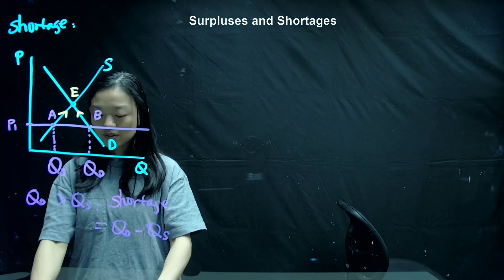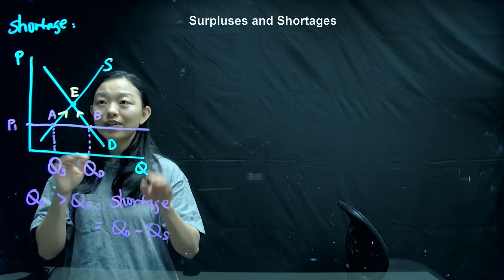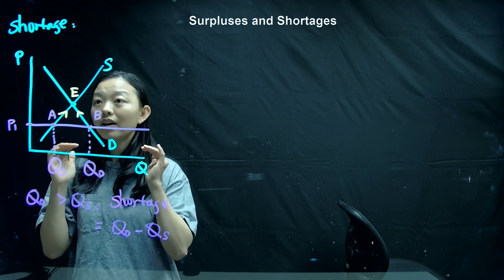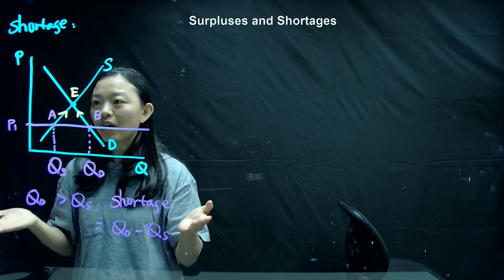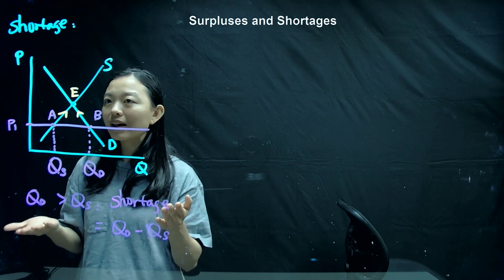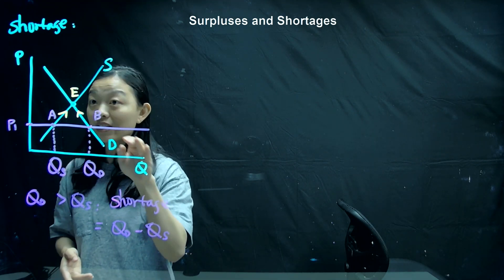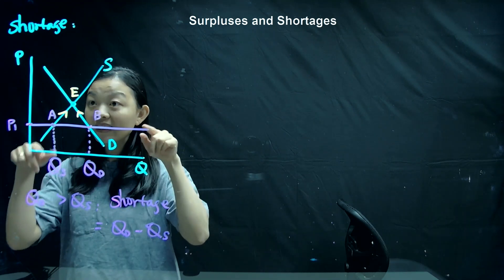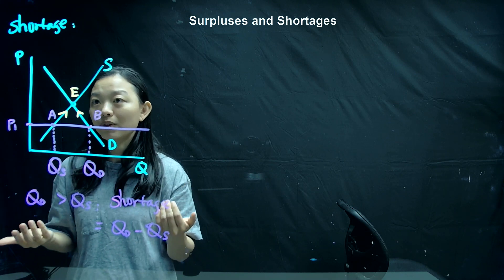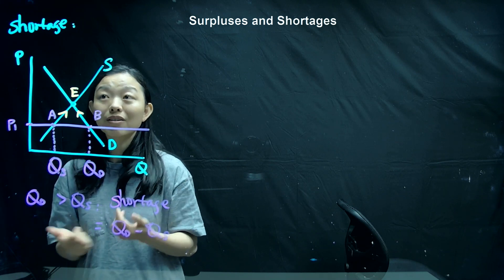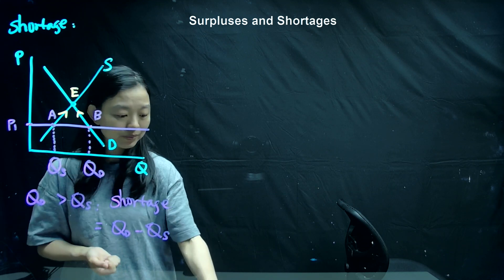So this is shortage and surplus. The very important thing is: when they tell you the market price, remember to draw a horizontal line across the demand curve and supply curve, and find out the quantity demanded and quantity supplied. That will help you determine whether the market is facing shortage, surplus, or has just reached equilibrium.